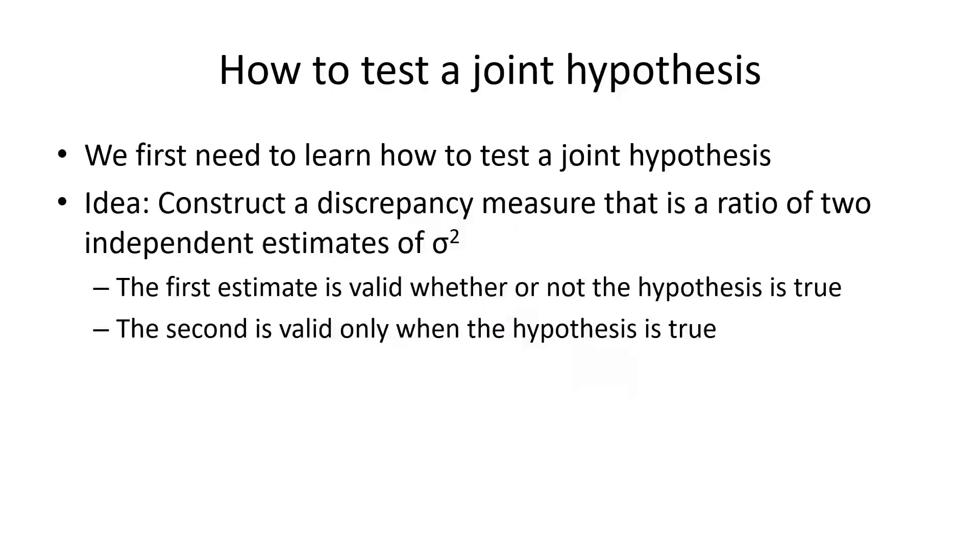We have formulated a joint hypothesis such as beta two and beta three and beta four equals zero simultaneously, so a joint hypothesis. And in this segment, we will learn how to actually test one.